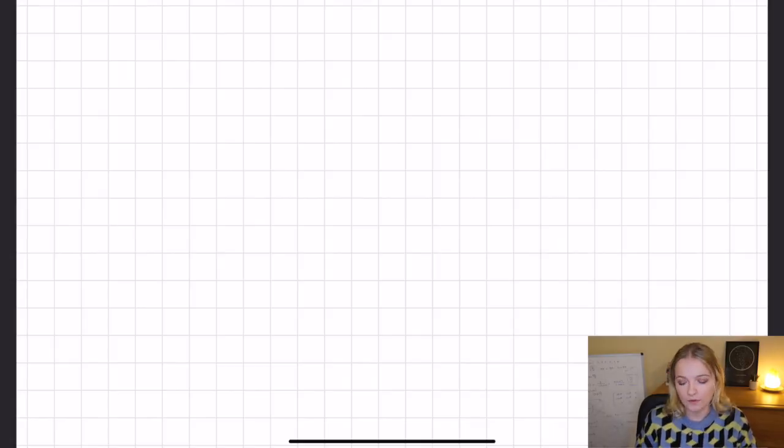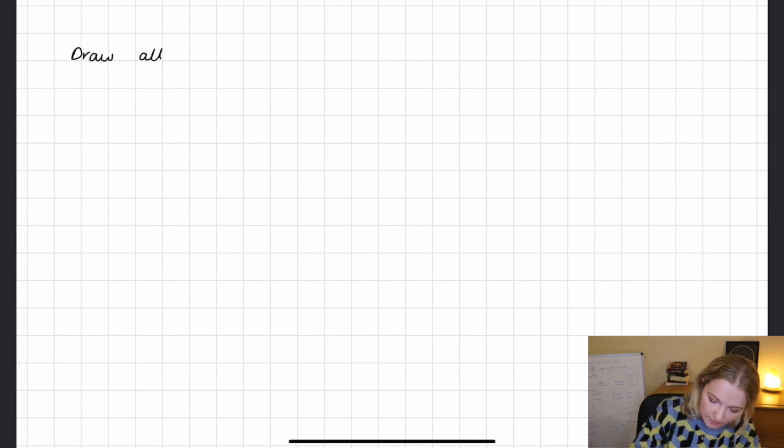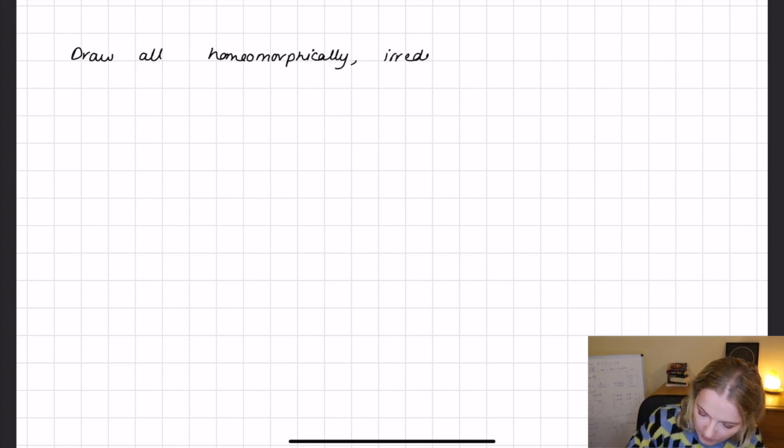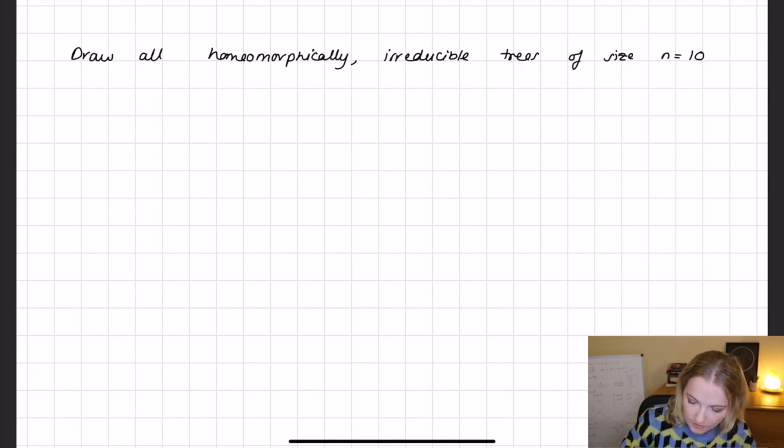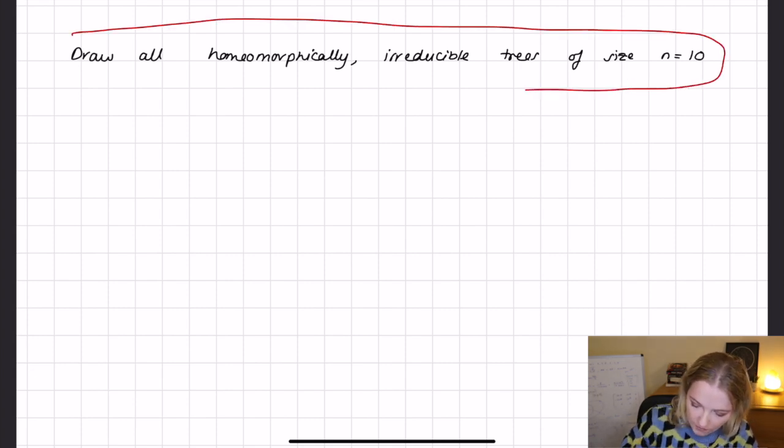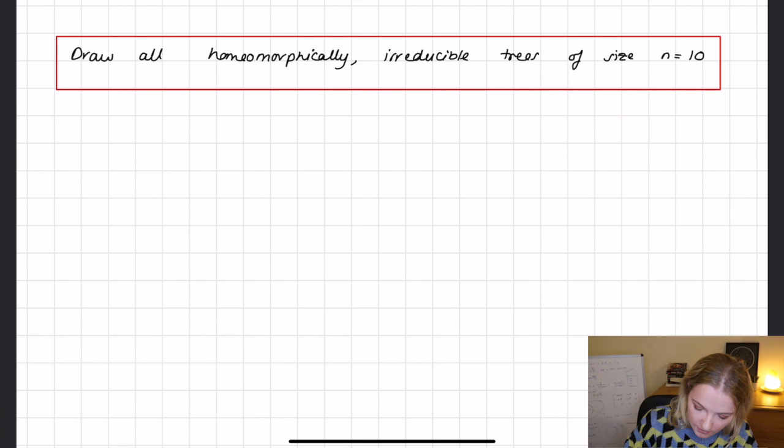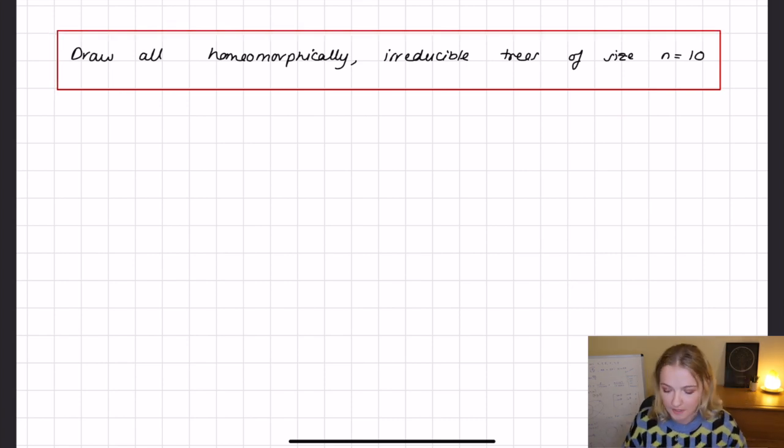First of all, what is the question on the blackboard? So the question on the blackboard basically says draw all homeomorphically irreducible trees of size n equals 10. So this is the question that we're trying to solve and essentially you don't need to know too much other than what these fancy words mean.